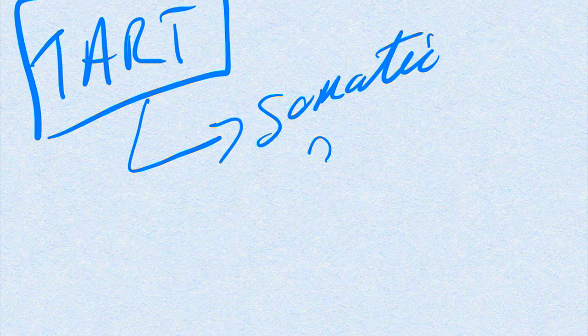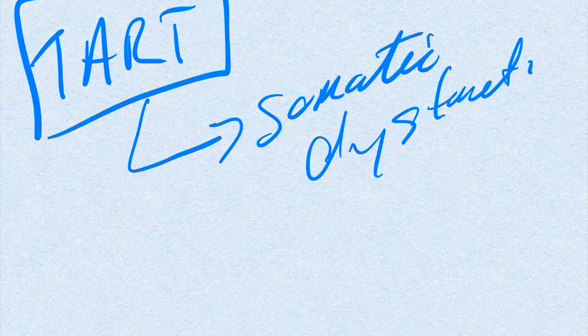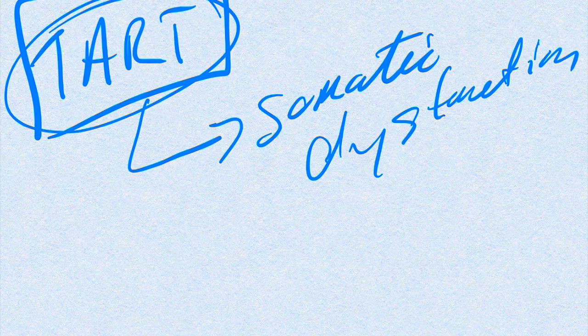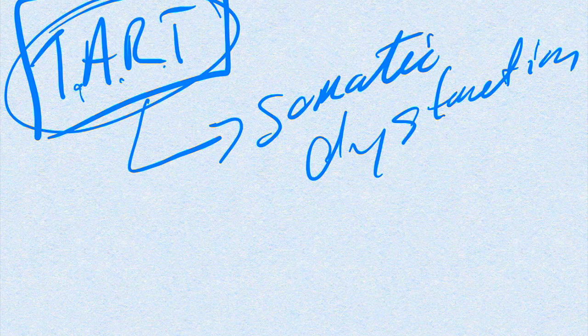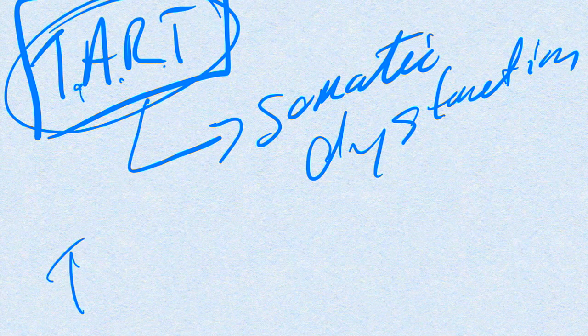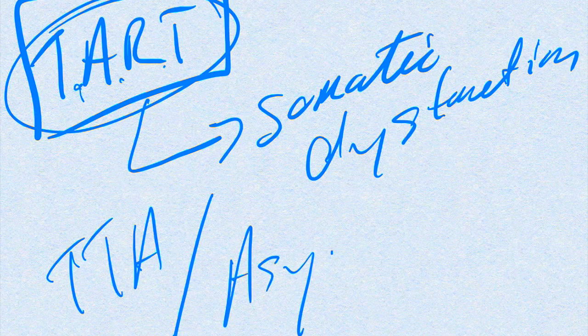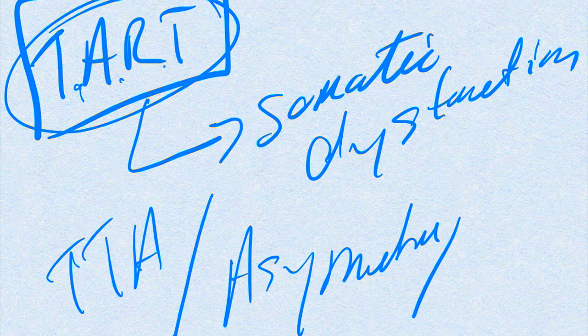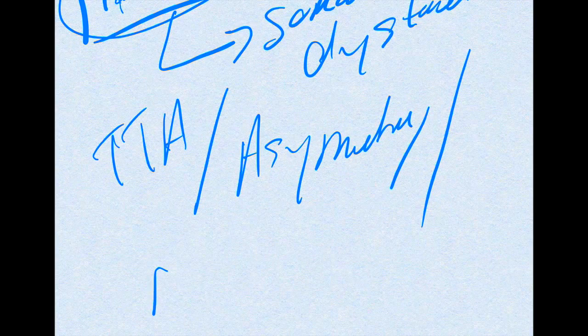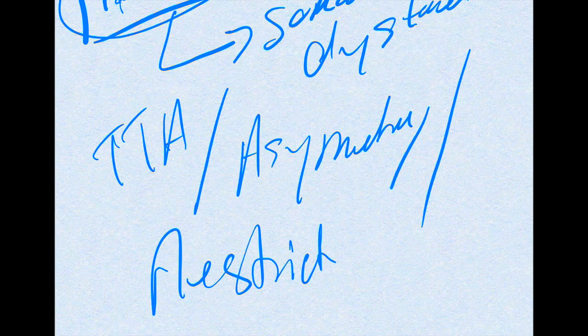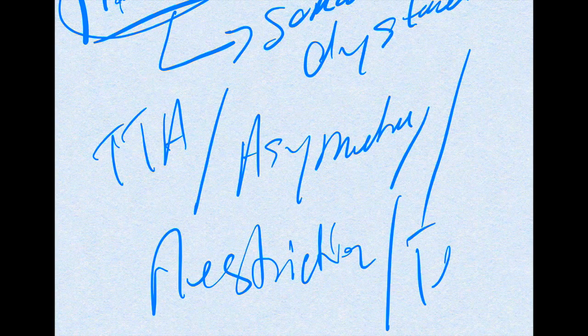T-A-R-T is basically how a somatic dysfunction may present. And so it's important to just understand what the meaning of T-A-R-T is. And so that basically is T is tissue texture, A is asymmetry. So I hope you can read my writing. R is going to be restriction, and T is tenderness.